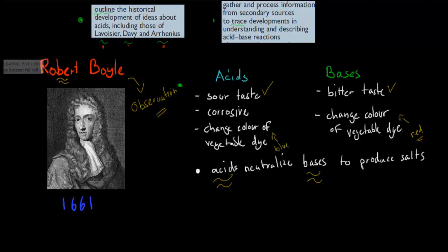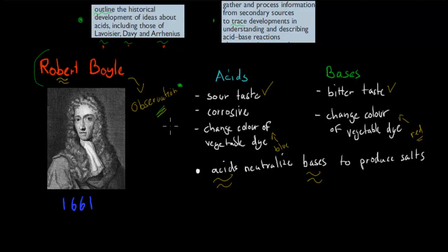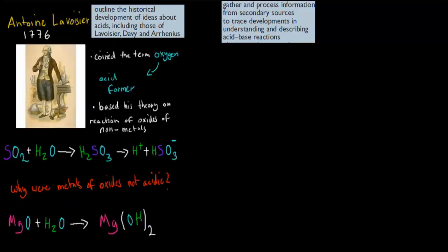For this dot point, you don't really need to know much about Robert Boyle, but you should know about him anyway because he made these observations, and because of those observations the theories came about. The first person of note is Antoine Lavoisier, and he did his experiment in 1776. From that name you might realize he's French.